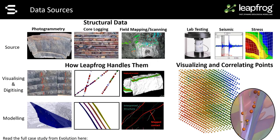Geotechnical data can be collected from a plethora of sources in many different formats. In terms of LeapFrog, the most relevant data source is going to be structural data and rock mass classification data. Some of the more common sources of this data are photogrammetry, core logging, underground mapping, pit wall mapping, bench crest inspections, and field scanning. This data can all be applied directly to your LeapFrog models to implicitly generate surfaces and then dynamically update these as new data is added. In the geotech space, there is also other data and work going on across a range of other software packages.